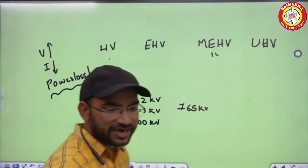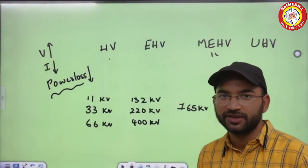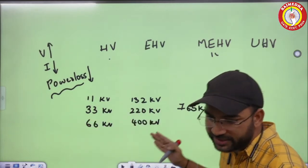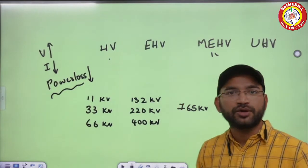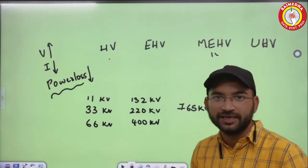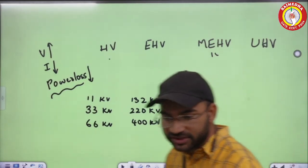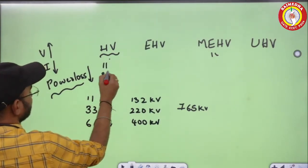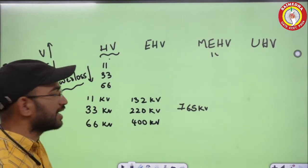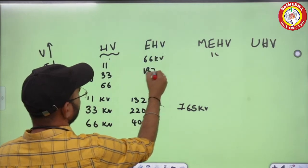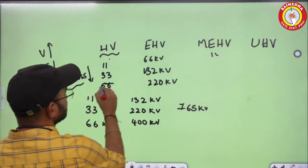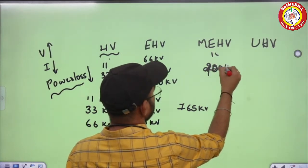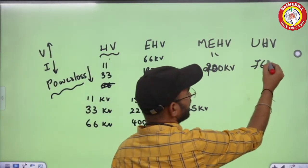We have a classification: 11 kV, 33 kV, 66 kV, 132 kV, 220 kV, 400 kV, and 765 kV. High voltage covers 11 kV, 33 kV, and 66 kV. Extra high voltage covers 66 kV, 132 kV, and 220 kV. Mega extra high voltage is 220 kV and 400 kV. Ultra high voltage is 765 kV.